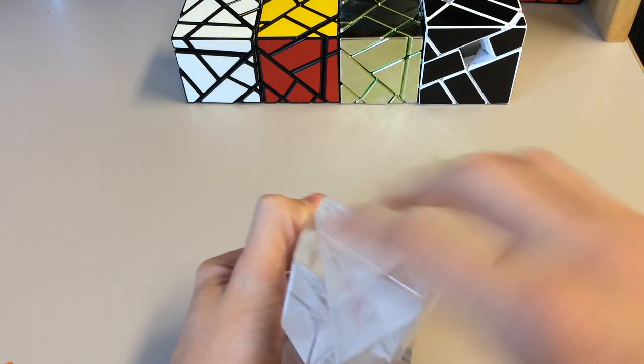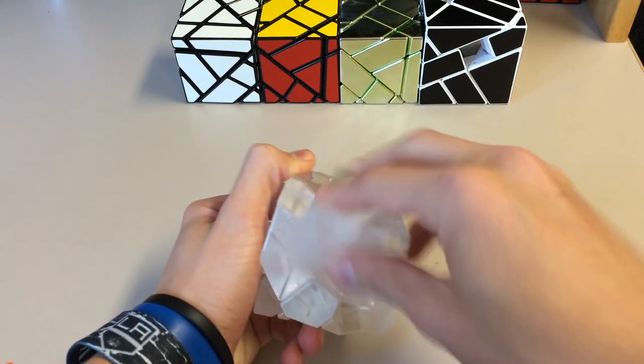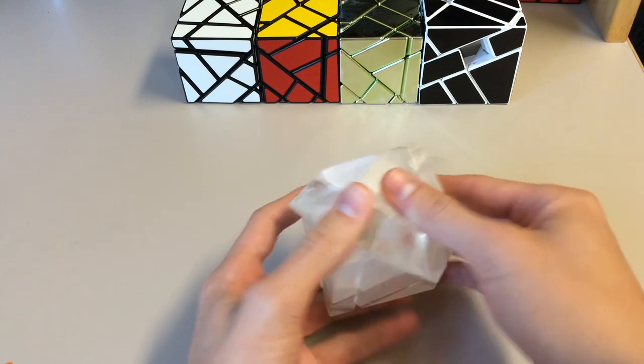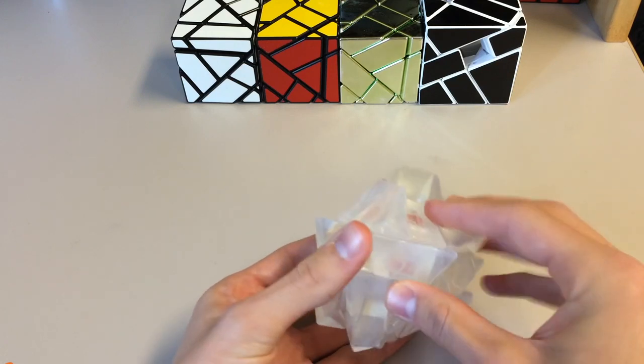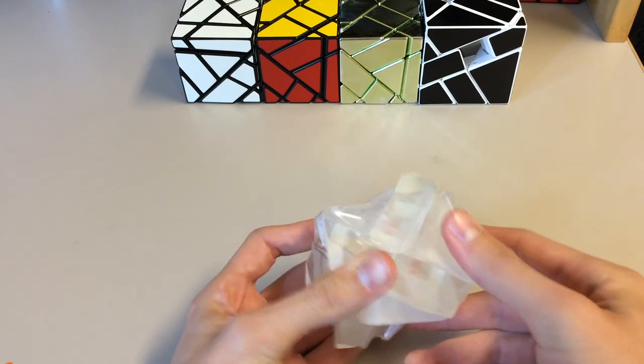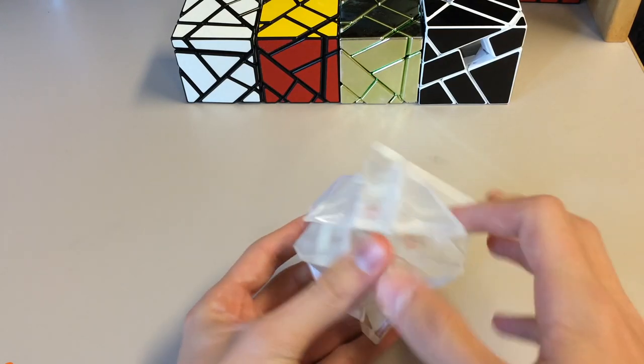This is turning as smooth as the metallic ones. Maybe there's something with the stickered ones. But anyways, I'm going to go ahead and scramble this because I love ghost cubes.